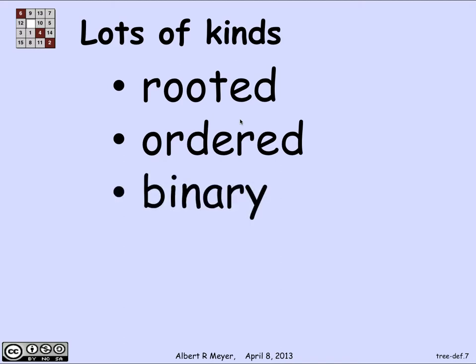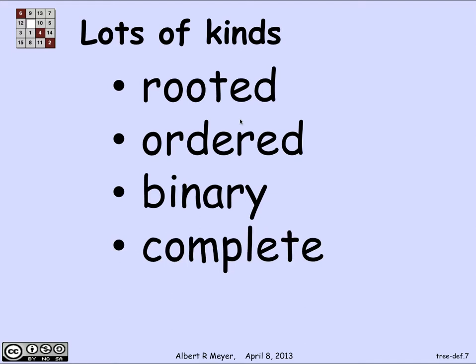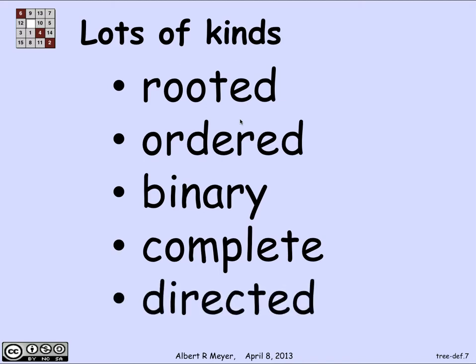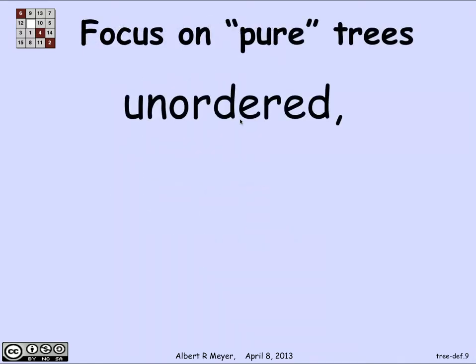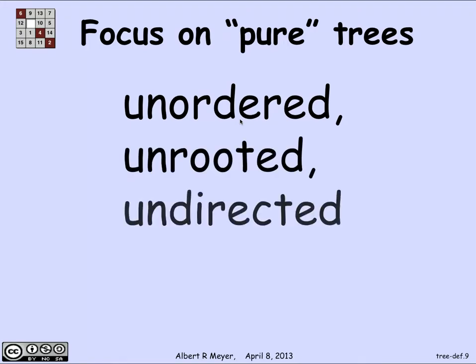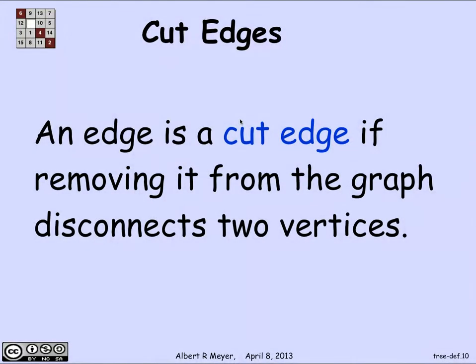There are binary trees in which each vertex has exactly two ways out, or no ways out if it's a so-called leaf. Then there are complete trees, whose definition is not important to us because we're not going to consider any of these. There are also directed trees in which edges have a direction as in a digraph. But we're not considering any of these — we're going to focus on so-called pure trees which are unordered, unrooted, and undirected. That's what we're talking about.